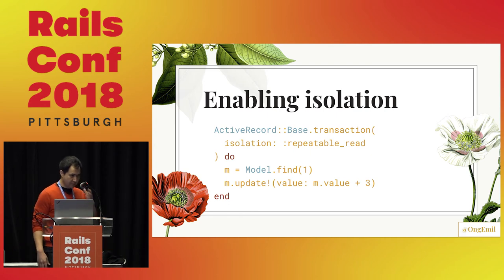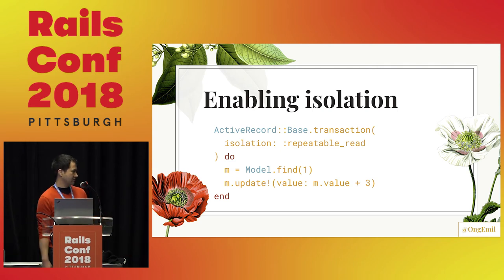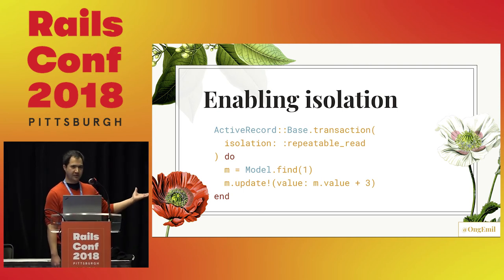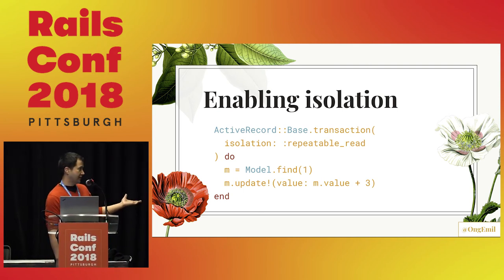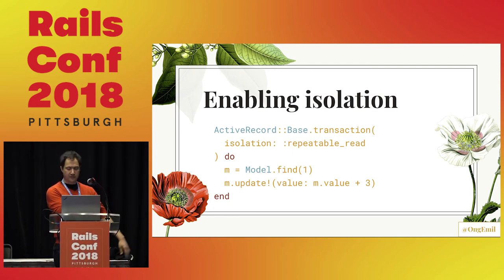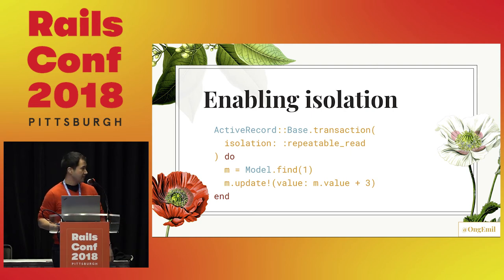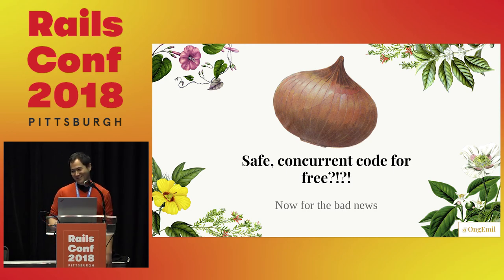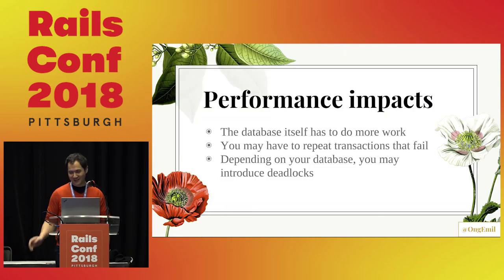Everything I talked about before is basically just SQL — we didn't really need to know anything about Rails or Ruby. But as mentioned, you can enable isolation in Rails as of Rails 4. What you do is specify an isolation level as an argument to the transaction block. So we're all done, right? It was less than one line of code for this whole talk — simply a parameter change. Yeah, not quite.